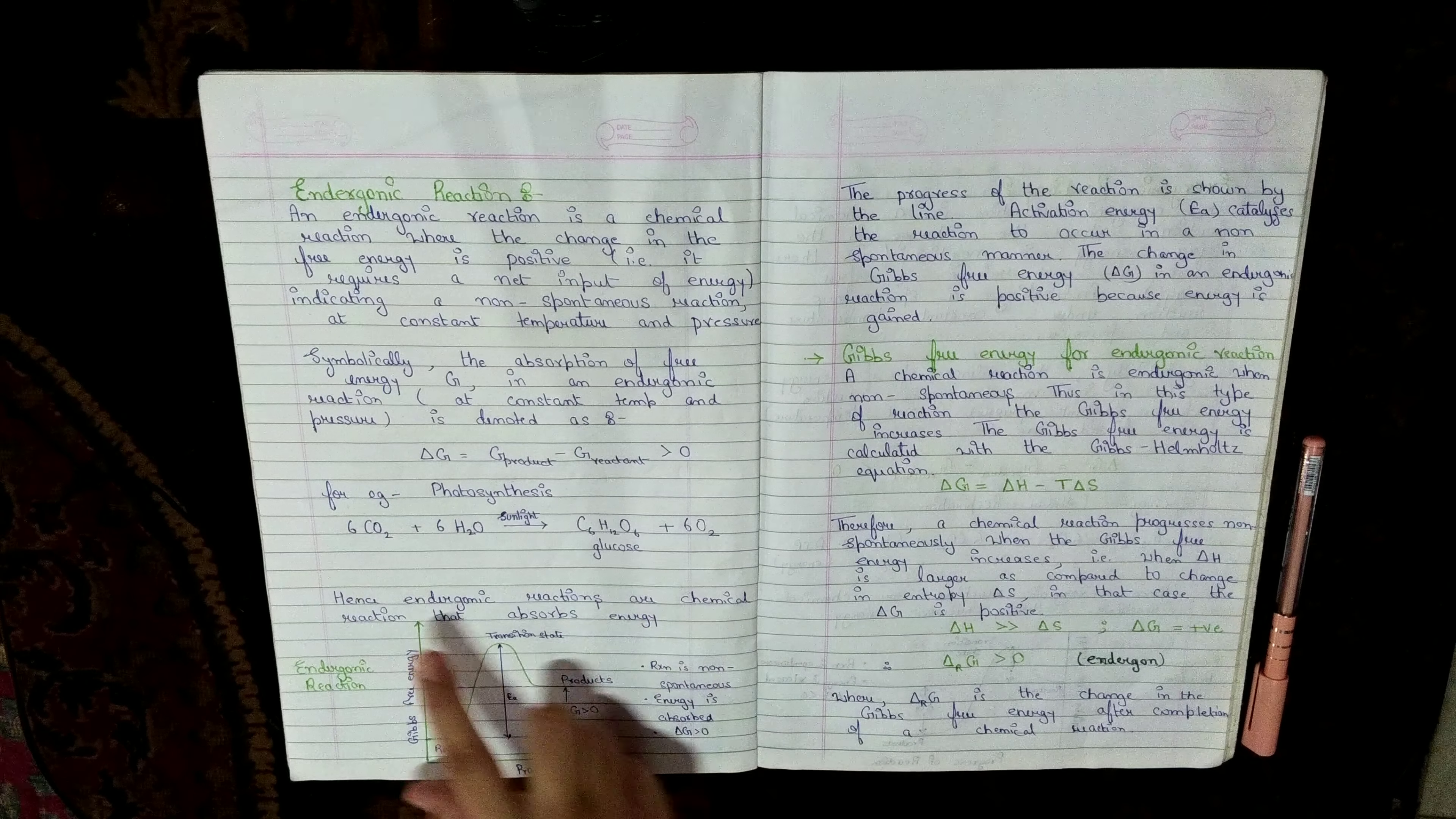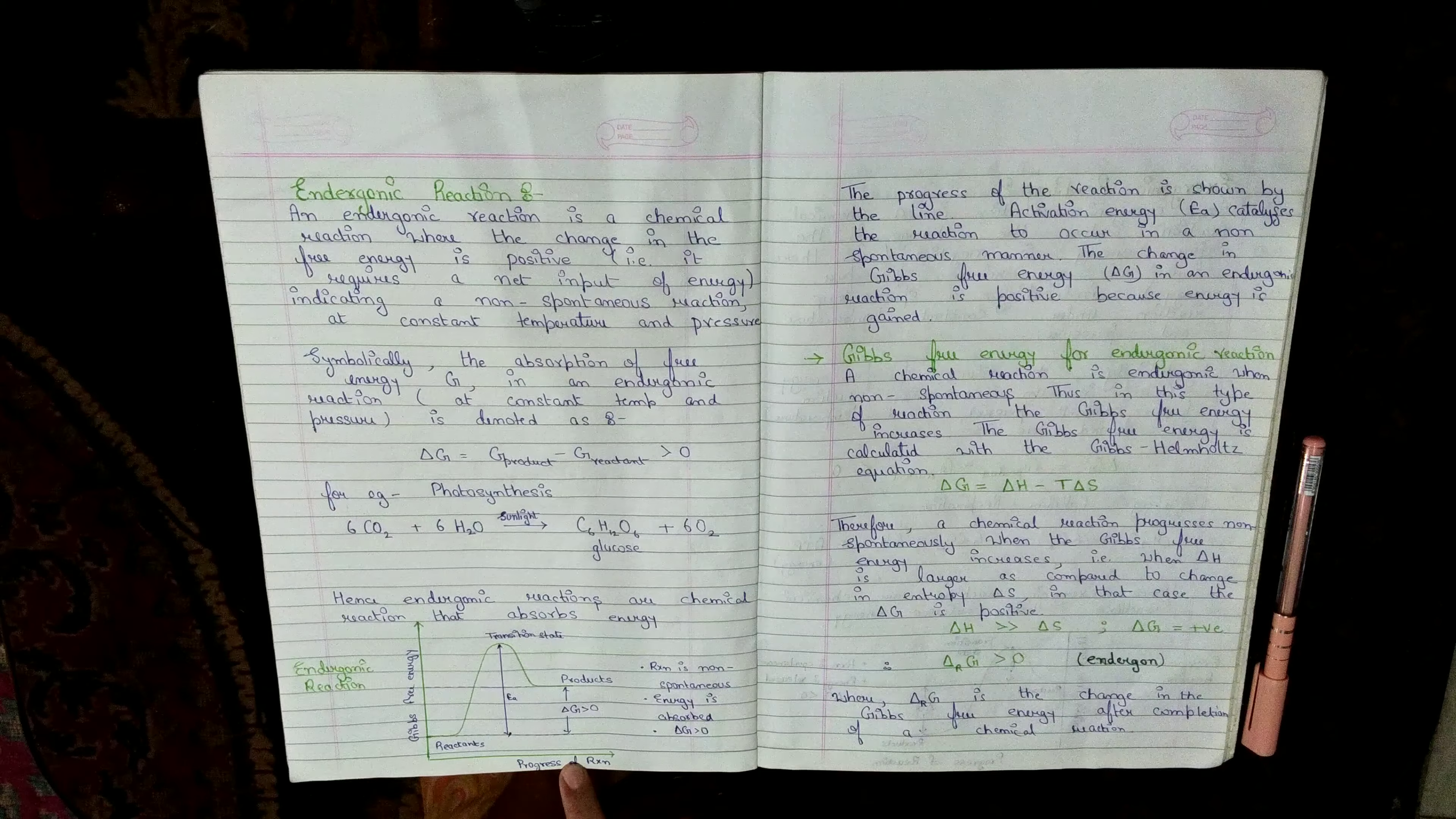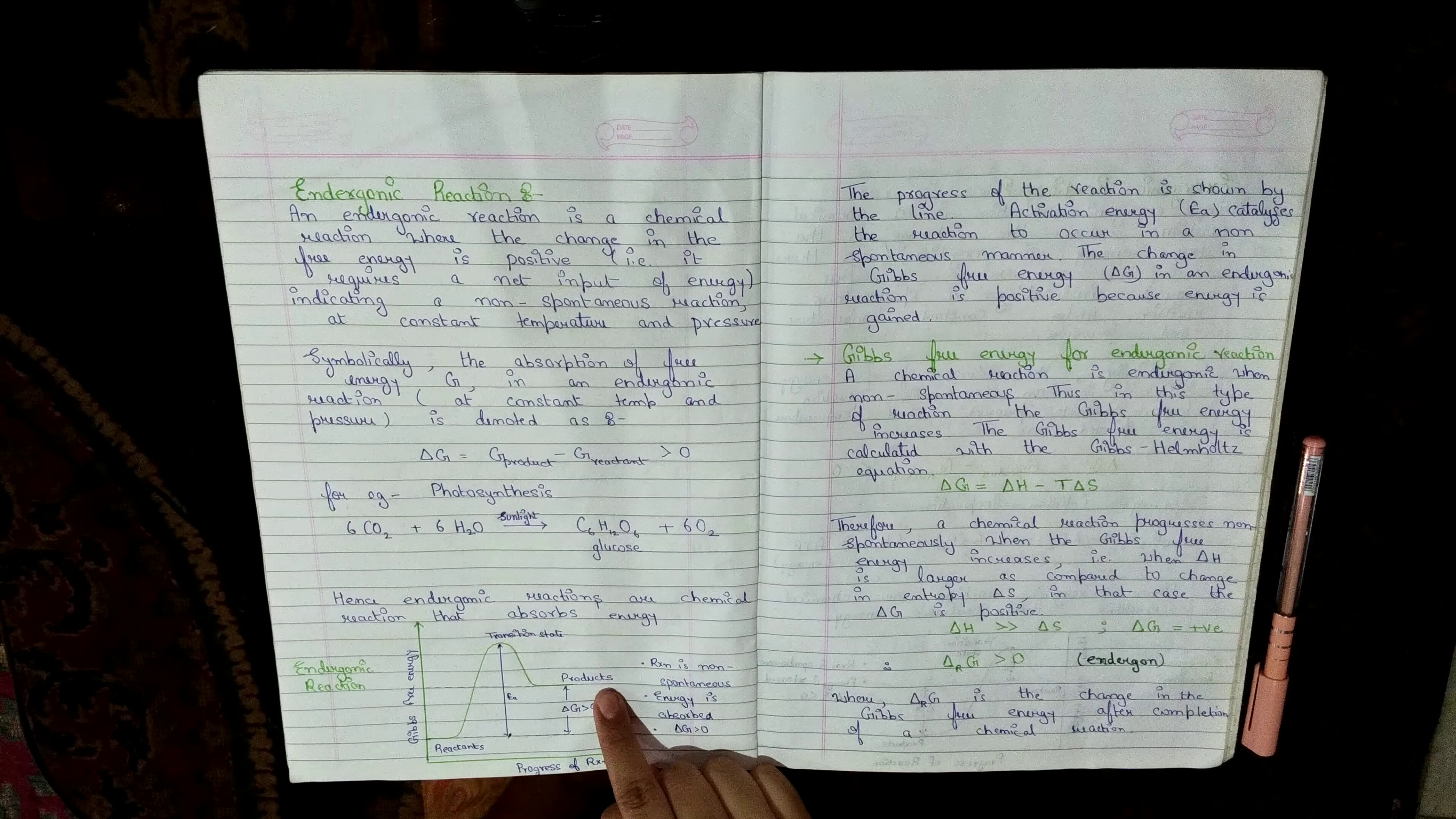Hence, endogonic reactions are chemical reactions which absorb energy. In the graphical representation, Gibbs free energy is plotted against the progress of the reaction. With the reaction's progress, reactants first attain the transition state and then convert into products.